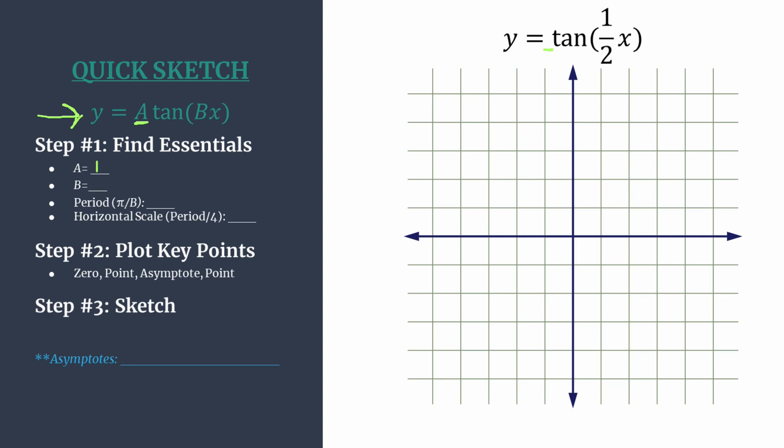B, that's the coefficient of x. In our case it's one-half and we'll use this to find our period. So the formula for tangent is pi divided by b. So pi divided by one-half or multiplying by the reciprocal two over one is going to be two pi. So our period is two pi. That's the length of one horizontal cycle.